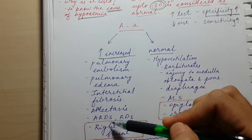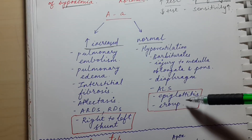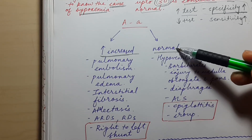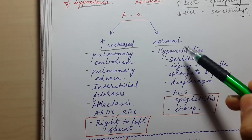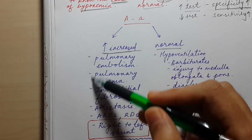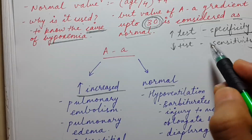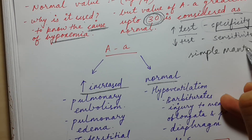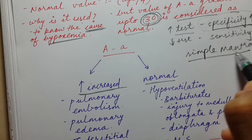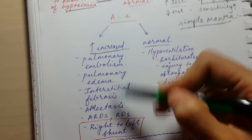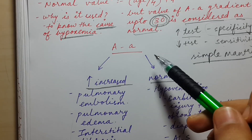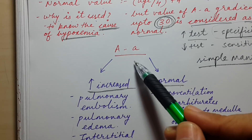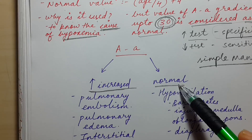These are all the causes of increased AA gradient, and these are all the causes of normal AA gradient — meaning causes of hypoxemia that result in a normal AA gradient. Instead of memorizing all these examples, just remember a simple mantra. If you know this mantra, from any cause of hypoxemia you can determine whether it will result in increased or normal AA gradient.